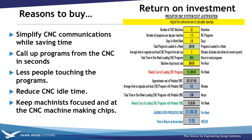Reasons to buy: simplify your CNC communications while saving time, call up programs from the CNC in seconds, less people touching the programs, reduced CNC idle time, and keep machinists focused and at the machine making chips. For return on investment, the sample shown is a shop that loads one and a half programs per day per machine. The current time to copy a program onto a USB stick, walk it to the machine, and load it is approximately five minutes per day. With Predator remote requests you will be way less than that. Keep in mind cost varies by number of machines and options selected, but either way your ROI will be pretty short.